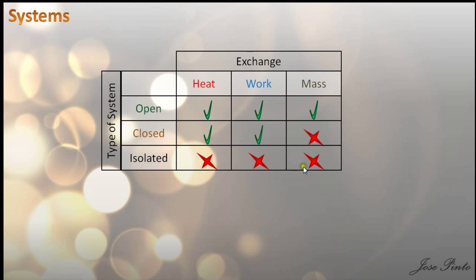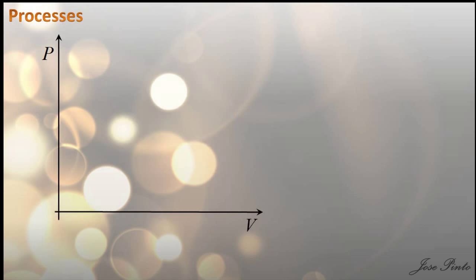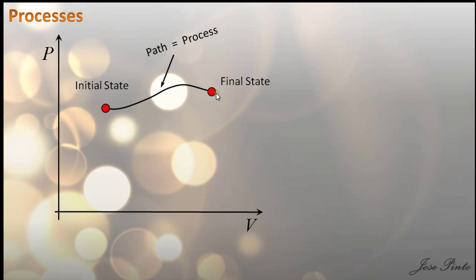An isolated system in thermodynamics is what you would call a closed system in classical mechanics. When a system in equilibrium state goes to some different equilibrium state, we say that a process took place.